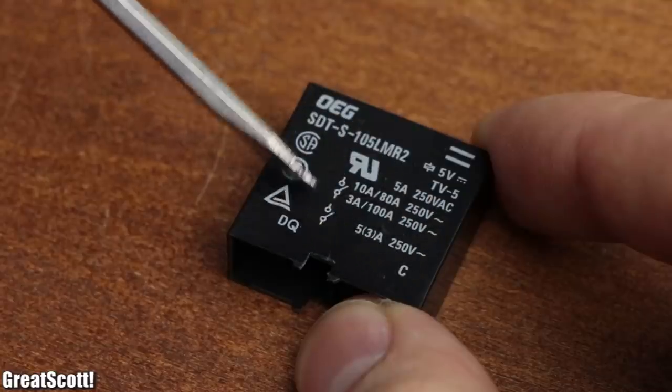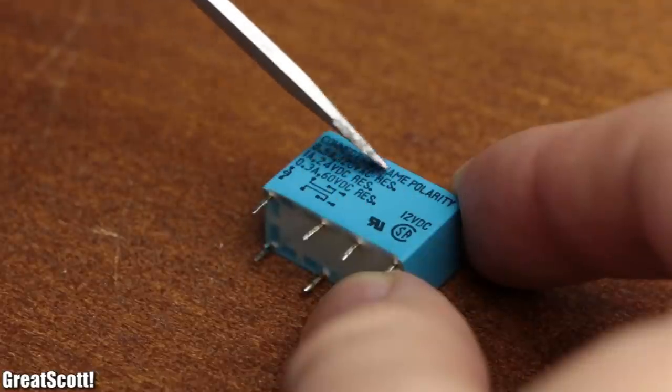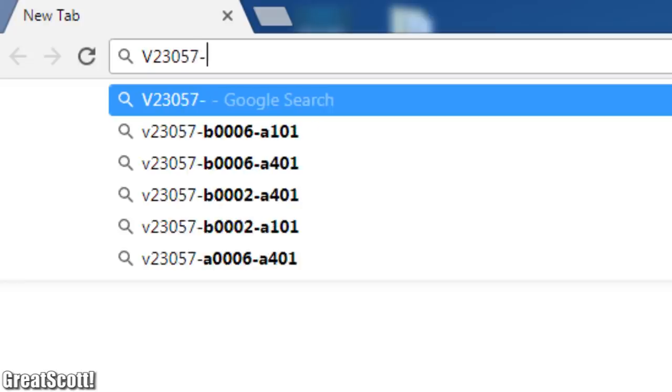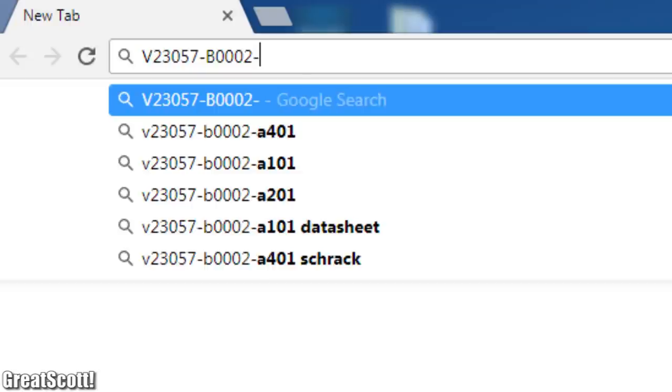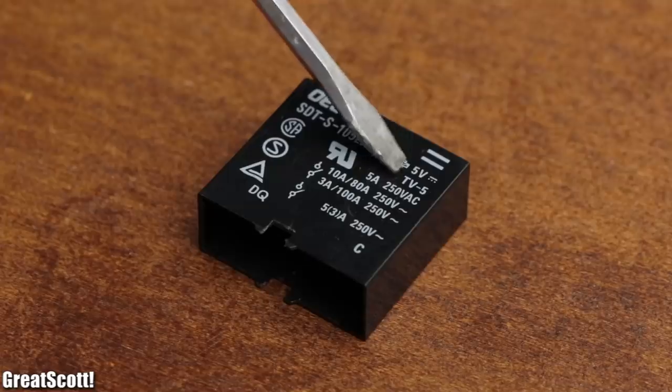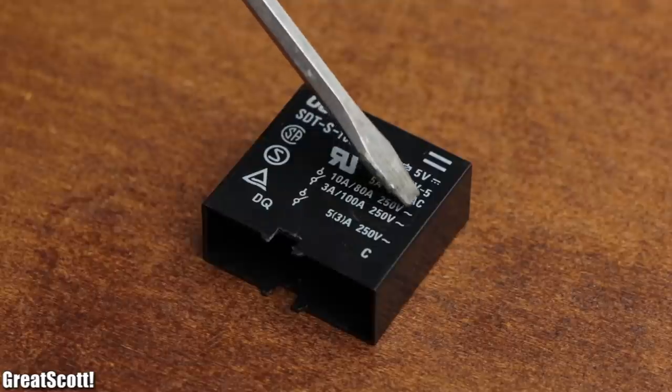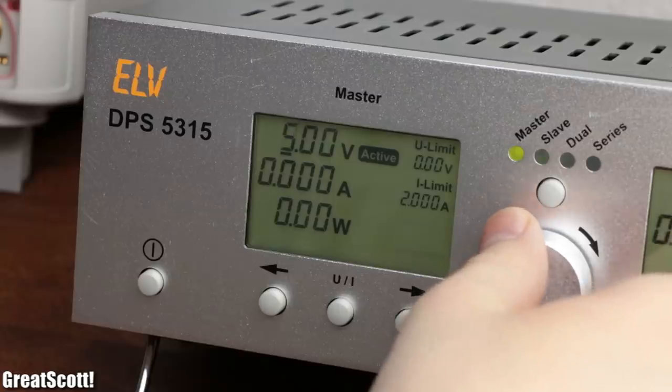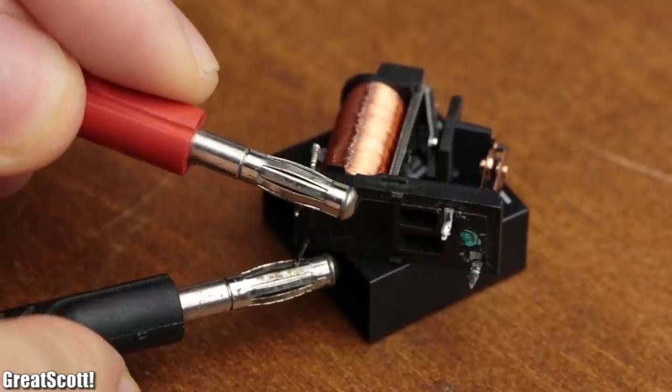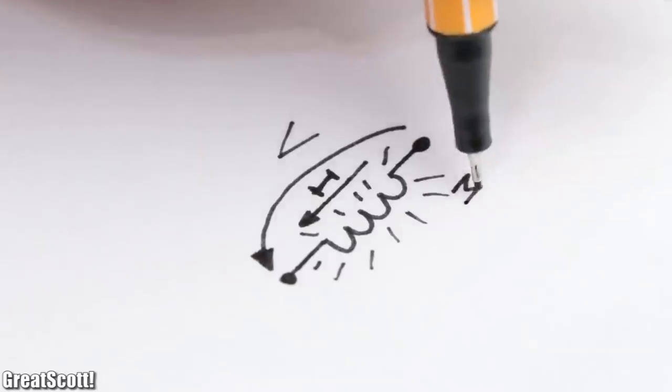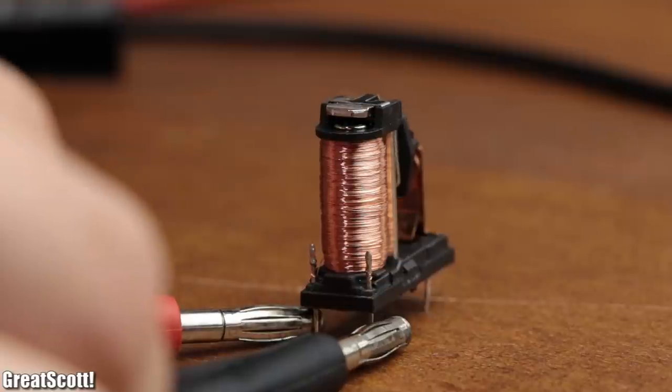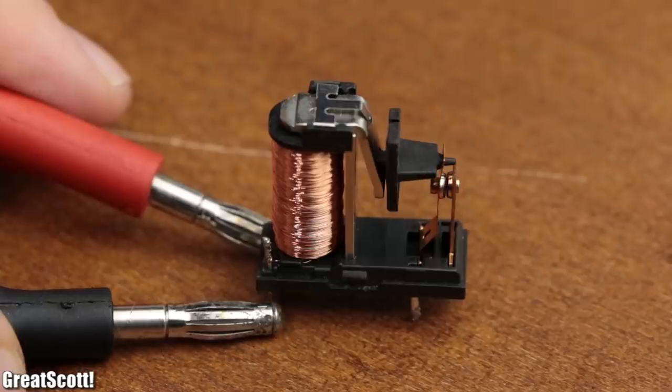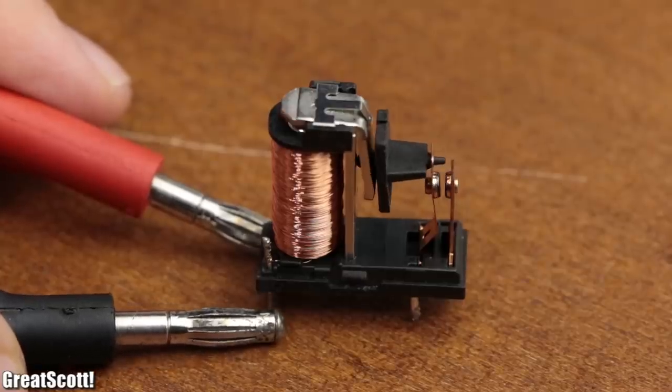On the enclosure of the relay, we also often find useful information. If not, then you need to Google the part number and use the datasheet instead. Anyway, our relay casing states a coil voltage of 5 volts, which means that by applying this voltage to the pins of the coil, current will flow through it, which thus creates a magnetic field, attracts the anchor on top of the coil and therefore closes the previously open contacts.